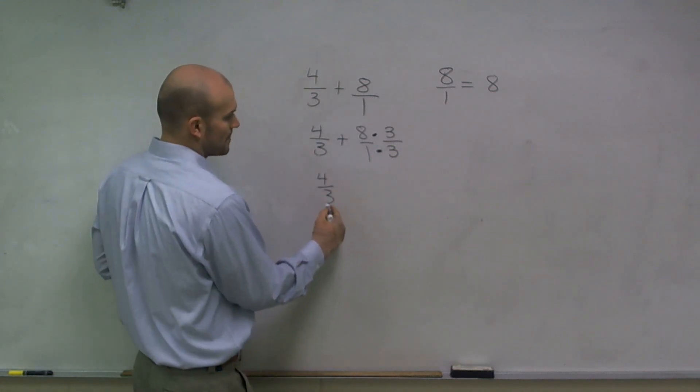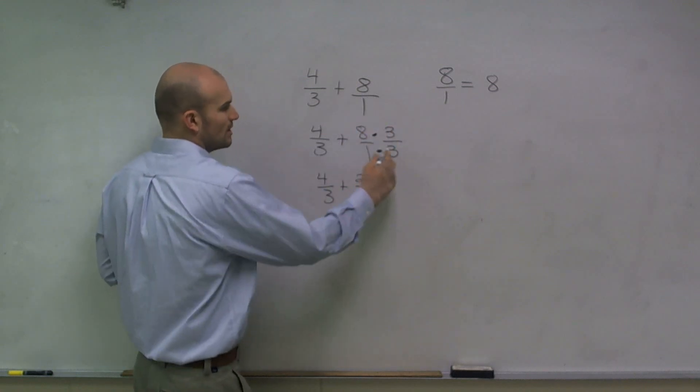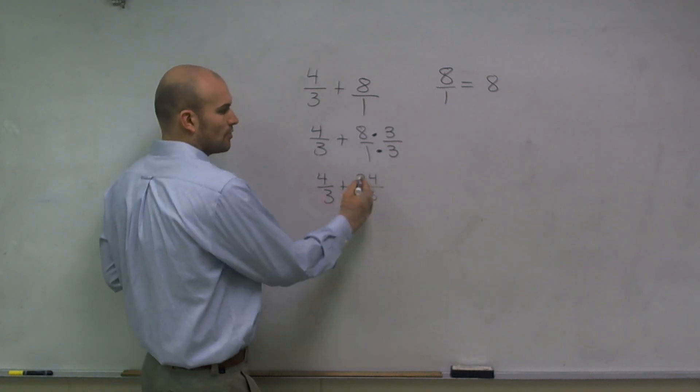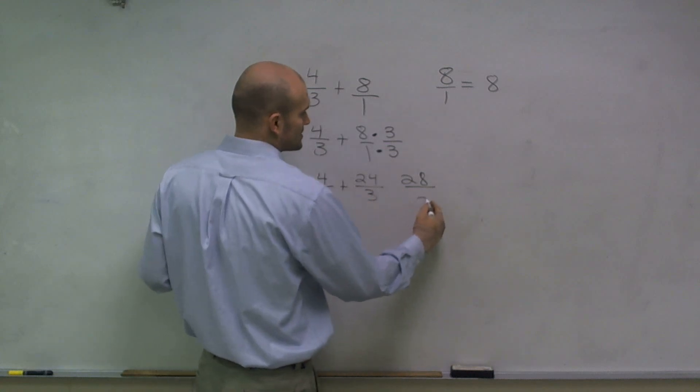So now I have 4 thirds plus 8 times 3, which is 24, 1 times 3, which is 3. So now, since I have the same denominator, I can add them. 4 plus 24 is 28. 3 plus 3 is 6.